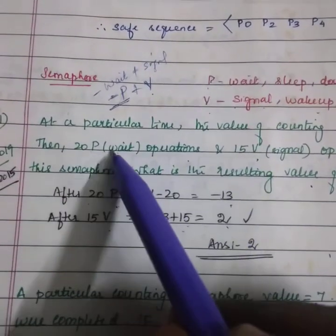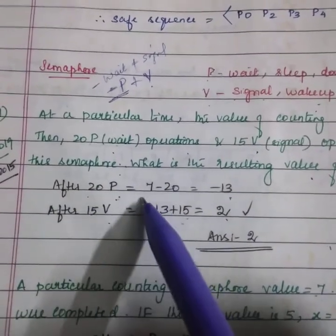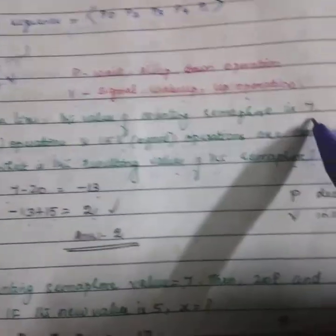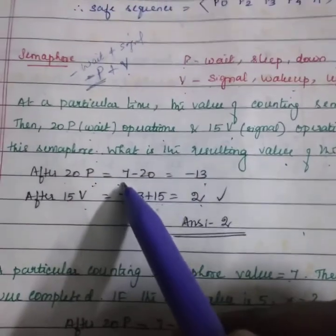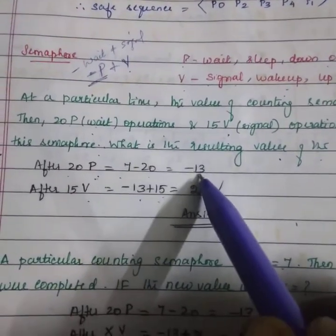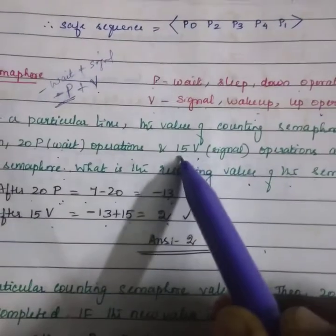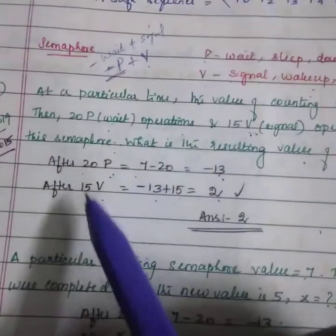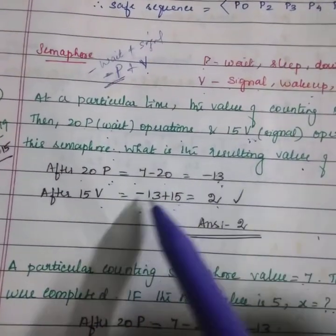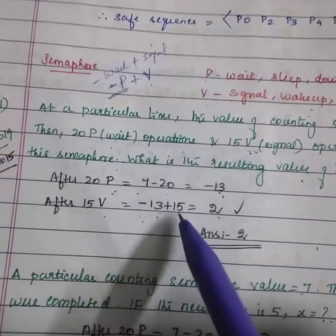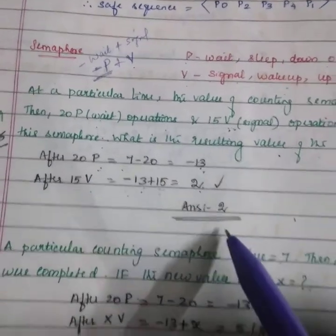Now let's solve this. After 20P equals the given is 7, 7 minus 20 equals minus 13. After 15V signal operations equals this minus 13 plus 15 equals 2. This is the answer.